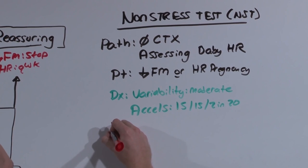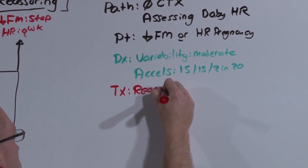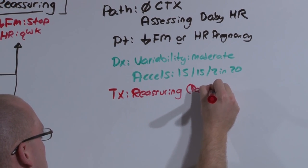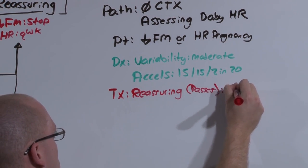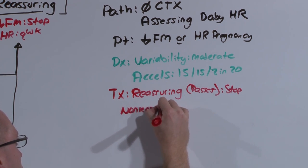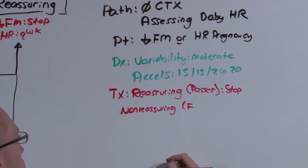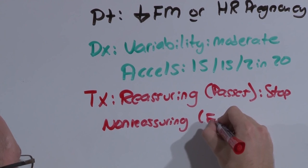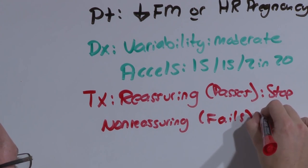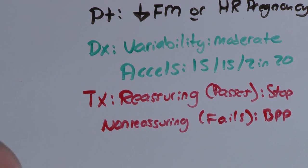Based on the results: if it is reassuring — baby passes the test — you can stop. If it is non-reassuring — that is, baby fails, meaning there is not moderate variability and not the accelerations you anticipate — you move on to the next step: the biophysical profile.